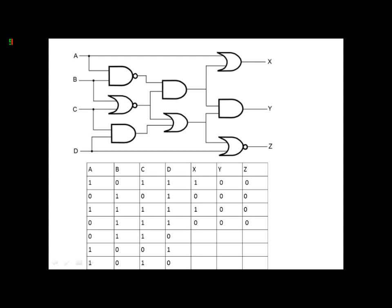For this one, A is 0, so X will be 0. B and C are 0, so Y will be 0. And Z, because neither of these will be 1, Z is going to be 1.